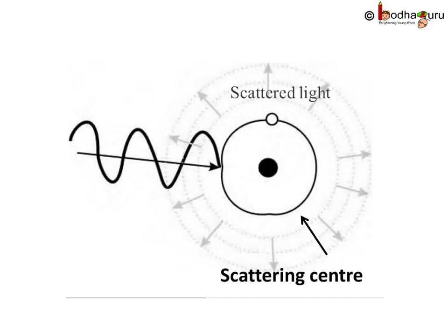The effect of light on a particle depends on its size. For example, small particles will scatter light of lower wavelength and higher frequency. The particle absorbs the light, then vibrates and emits a certain fraction of the absorbed light in all directions. That light is called scattered light, and the particle that scatters light is the scattering center.